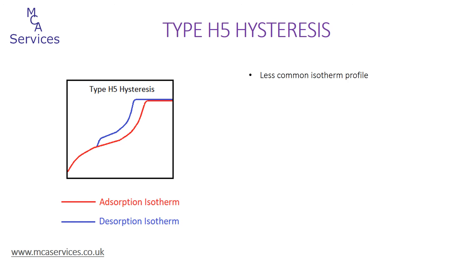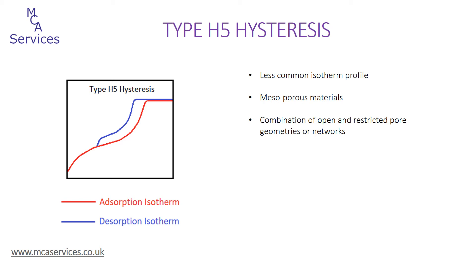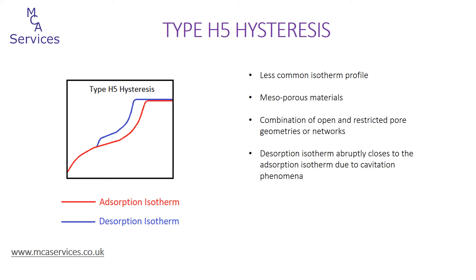Type H5 hysteresis is quite uncommon compared to the others, but is worth briefly considering. The adsorption isotherm is type 4, so we're considering mesoporous samples. The change in gradient to a more gradual decrease in desorption volume during desorption is associated with porosity existing in environments of varying restriction to pore geometry or within the porous network. We again see the sharp abrupt closure of the desorption isotherm to the adsorption, and as with types H3 and H4, the desorption isotherm becomes less useful when characterising pore sizes.